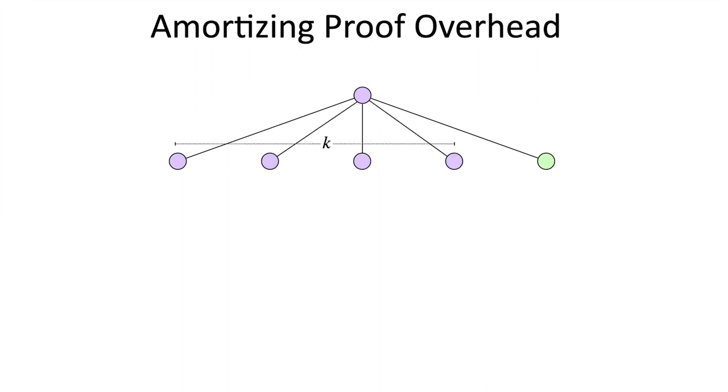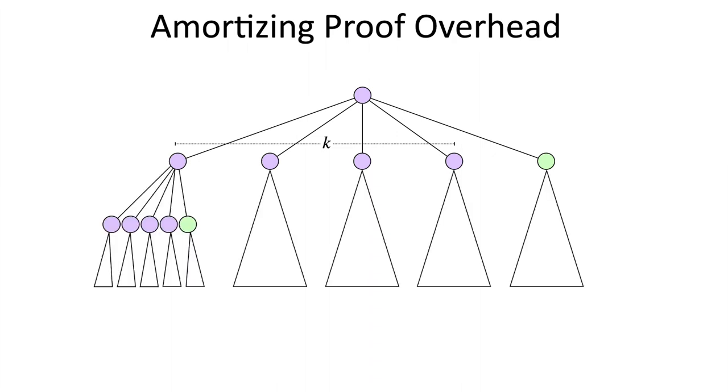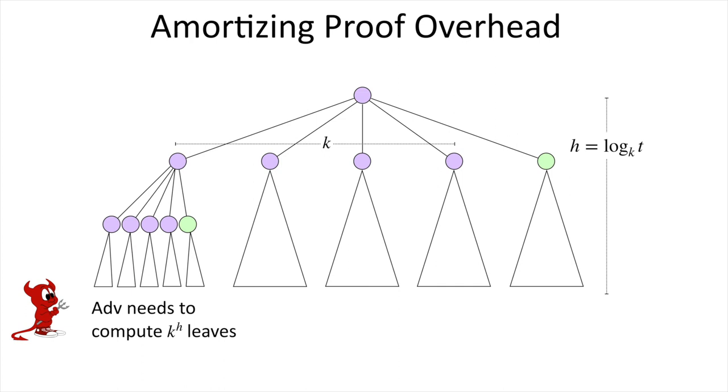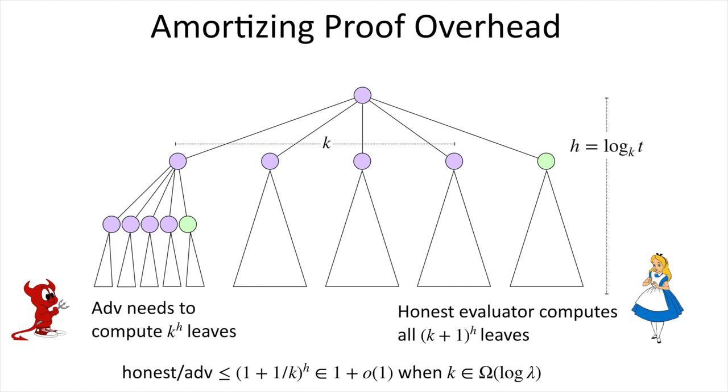So to fix this, we increase the arity of the tree to K plus one for some parameter K. And now we've essentially just decreased the overall fraction of proof nodes. So again, if we look at what the adversary has to compute versus what the honest party has to compute, if we let the height of the tree be H, then the adversary has to compute roughly K to the H leaves. You can think of this as the adversary computing all the leaves in the K-ary tree, so the tree without any proof nodes, whereas the honest evaluator computes all the leaves in the K plus one ary tree. If you work this out, then it turns out that as long as K is super logarithmic in our security parameter, we do get this really tight gap that we want. I should also add that the height of our tree can be constant as long as T is polynomial in K. So in our construction, we actually set this arity parameter K to be our security parameter, and then we can handle any polynomial T number of steps while only relying on constant round Fiat-Shamir.